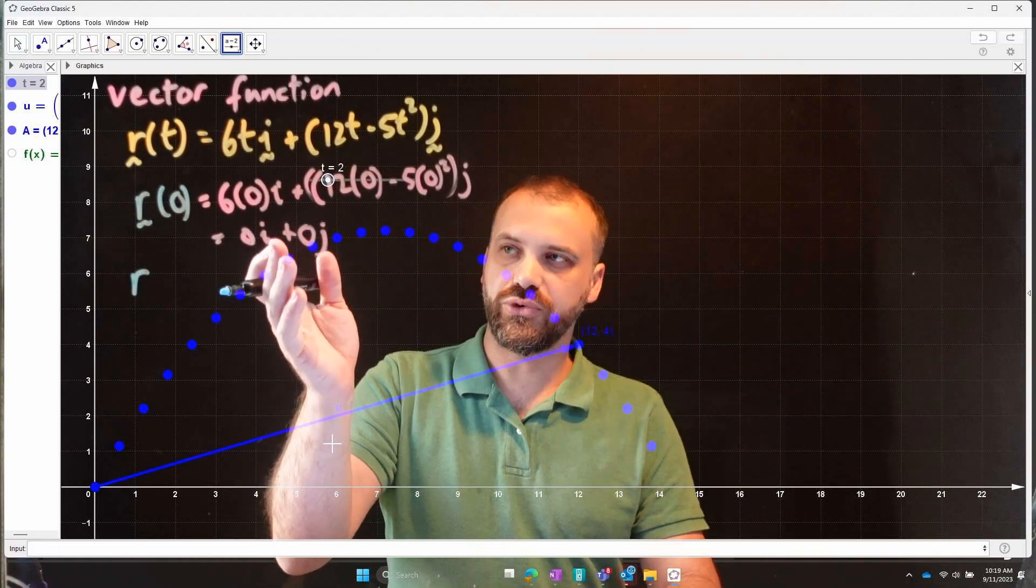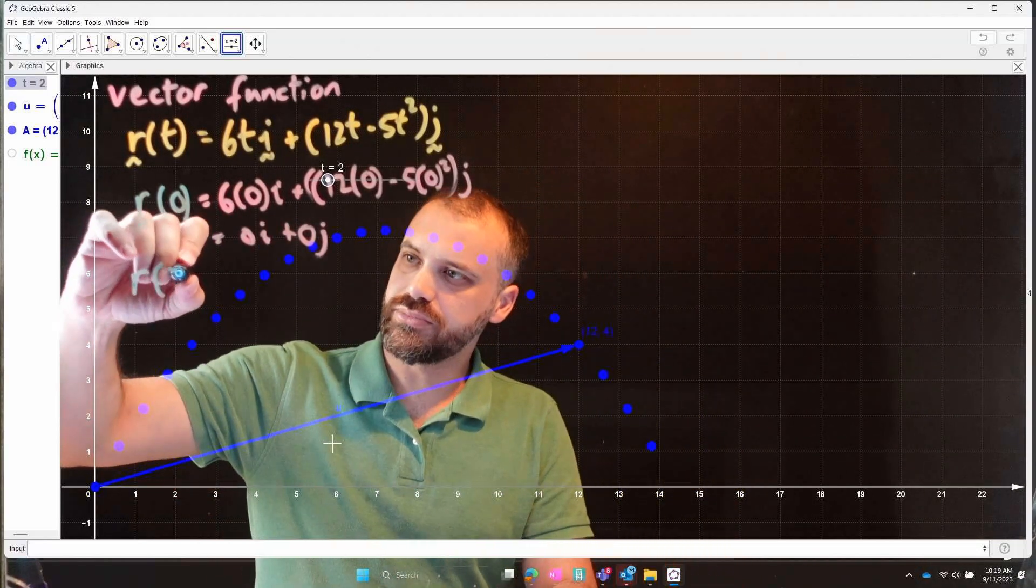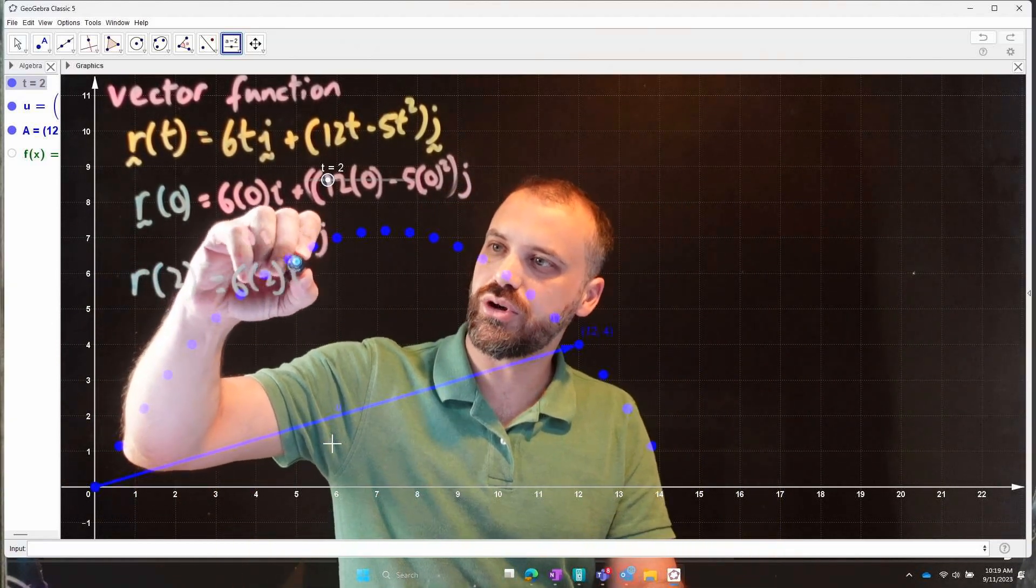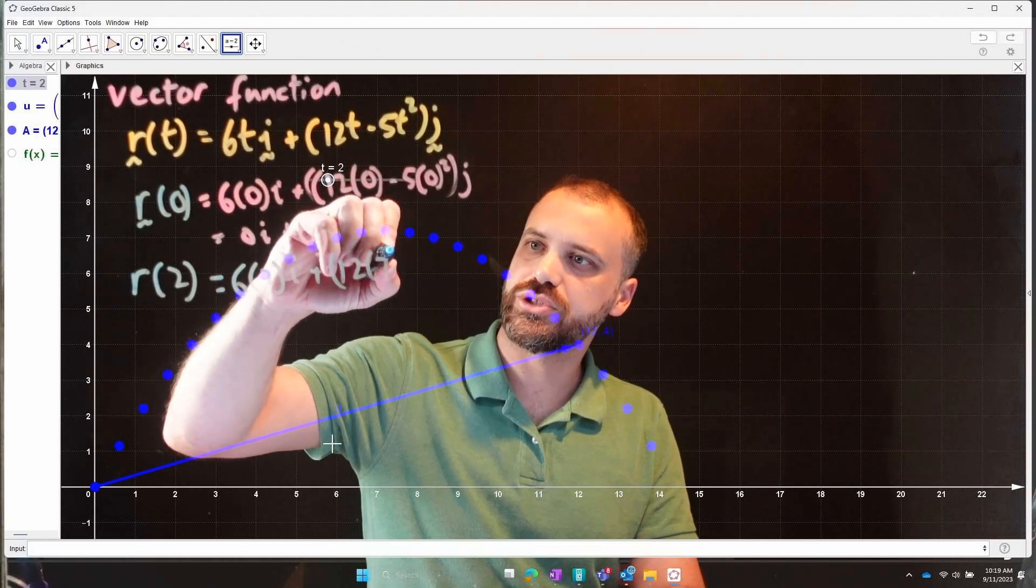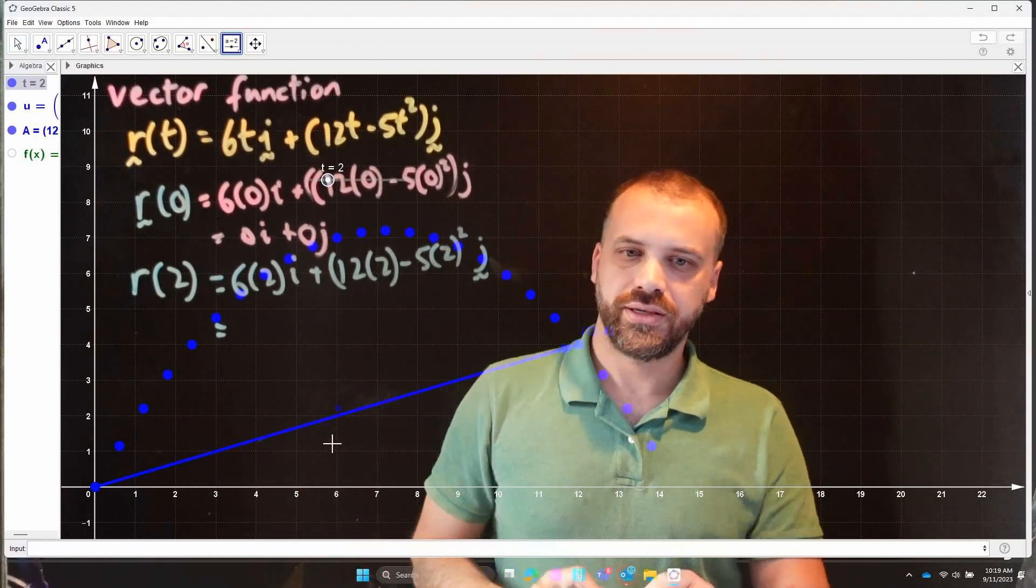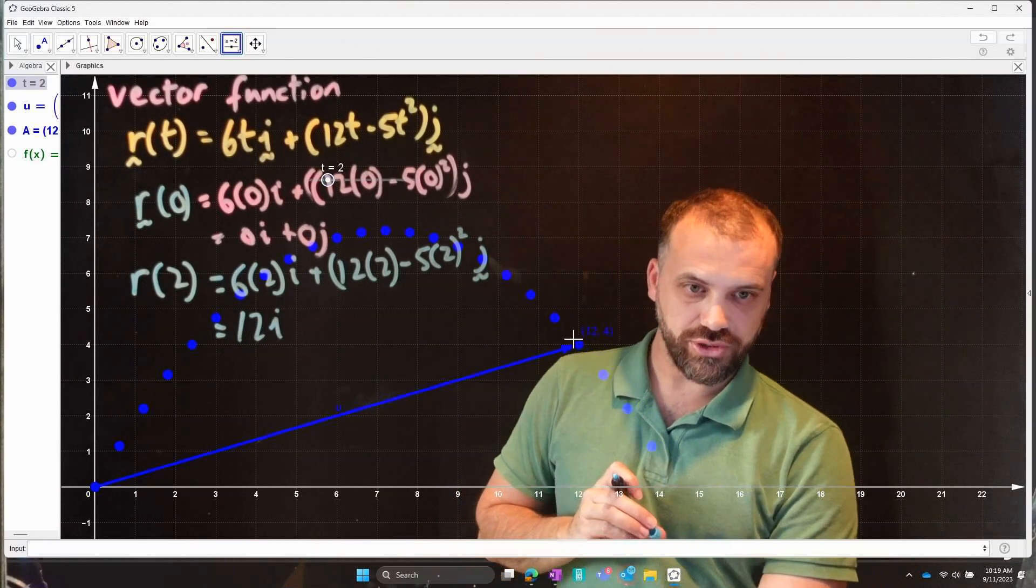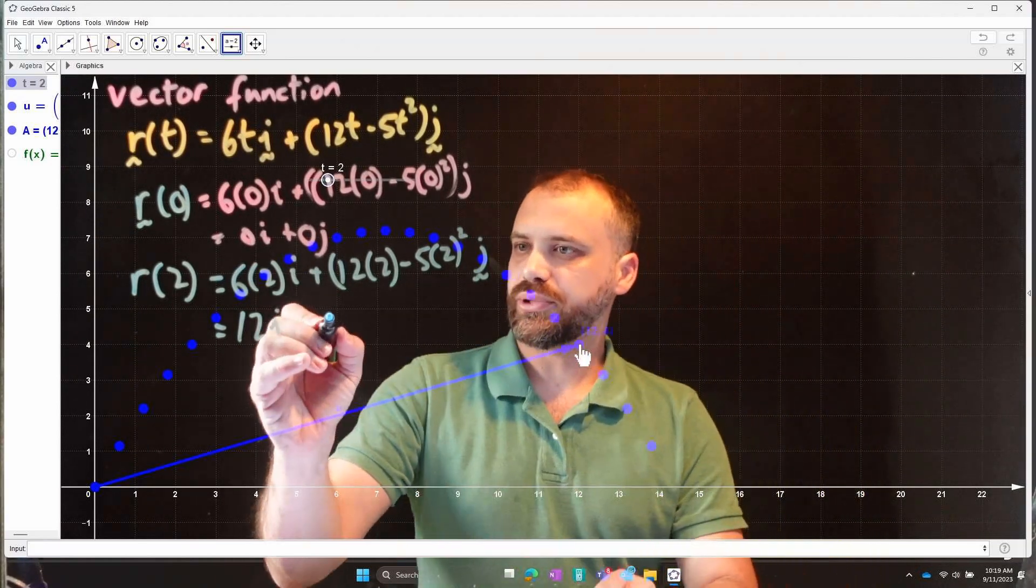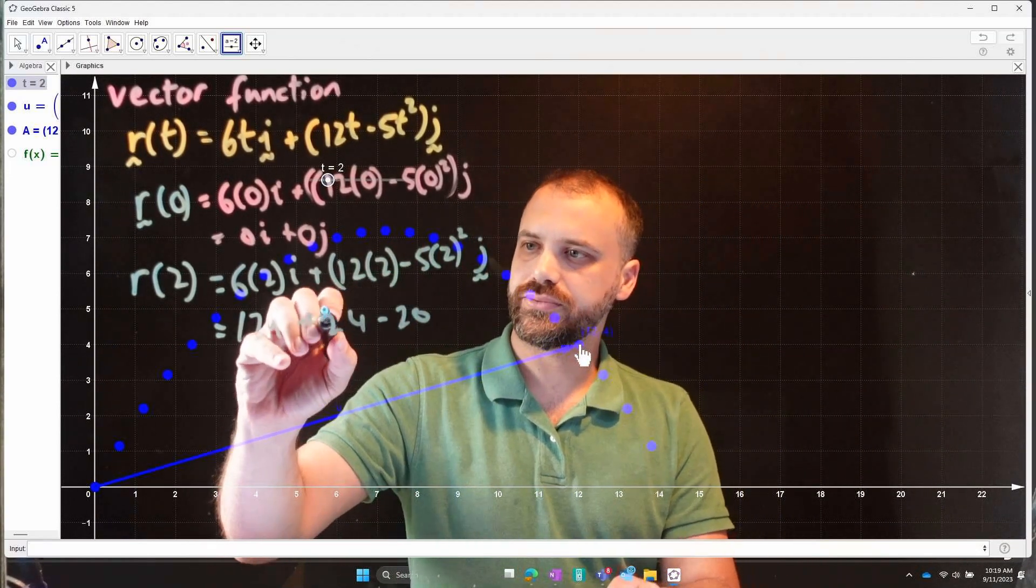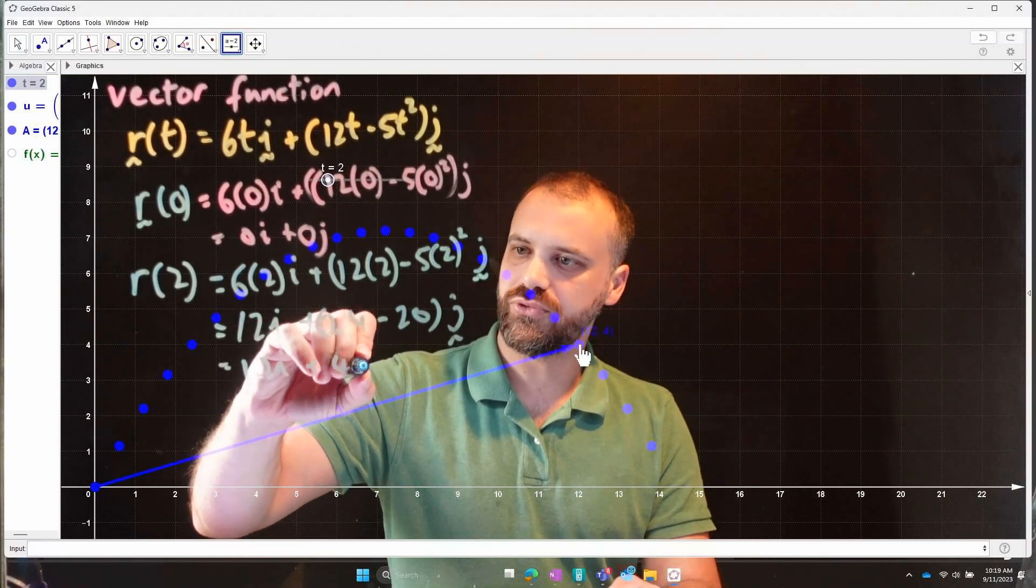What if we just wanted to use our vector function to figure that out? We just do what I did before. Before, I said, well, at time zero, and I sub zero. But if I sub time two in, what do we get? We get six times two i plus 12 times two minus five times two squared j. All right. So we get 12i, which is what we expect. You can see my dot here, 12 plus 24 minus, that's going to be 20j.